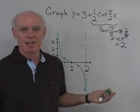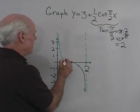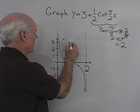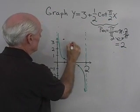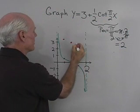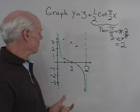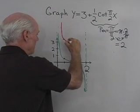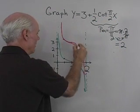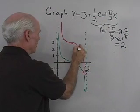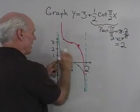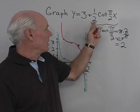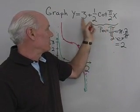Now I need to add the vertical shift of 3. Whatever was at ½ is now going to be 3½. Wherever the graph was 0, now it's going to be 3. Where it was negative ½, now it's ½ below 3. So I get a graph with the same shape as the cotangent graph but everything moved up 3 units. That's a look at a fairly complicated function: 3 + ½ cot(πx/2) — period changed, amplitude changed, and everything shifted up.